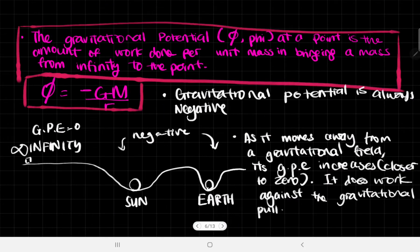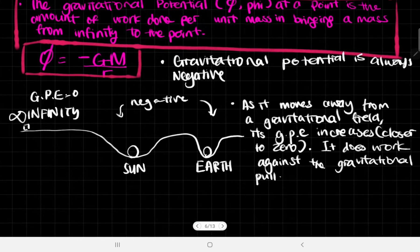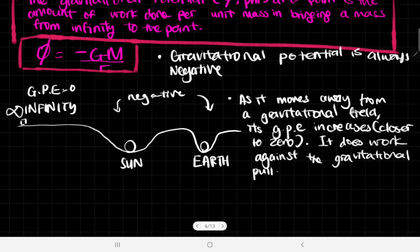So as we come closer to the sun, there is less and less gravitational potential energy. Why? It's because, let's say you have something from the surface of the Earth.